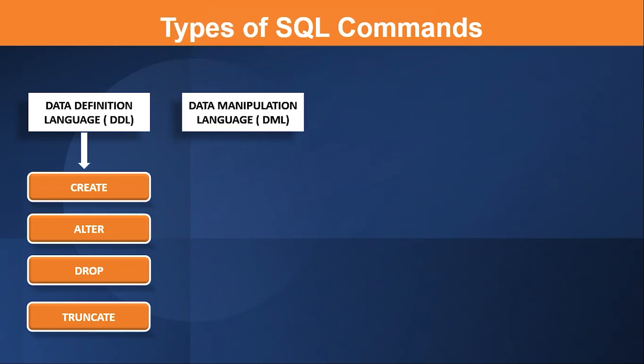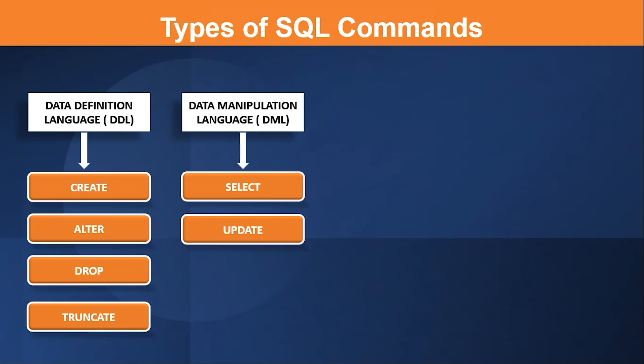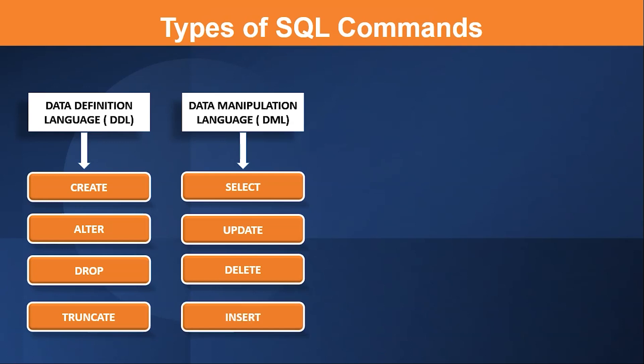The next one is Data Manipulation Language, or DML. DML is used to access and manipulate data in tables. Commands used in DML are: Select — used to extract data from the tables; Update — used to update a value in the existing table; Delete — unlike the drop command, the delete command is used to delete a specific row in the table; and Insert — used to insert a new value into the table.